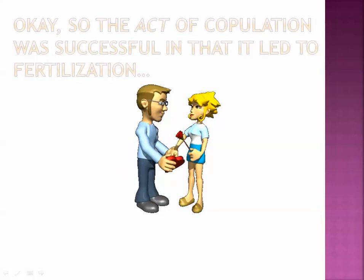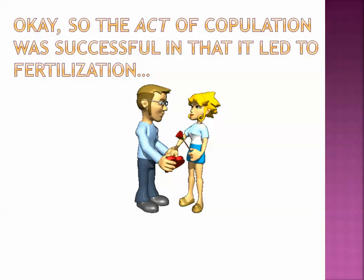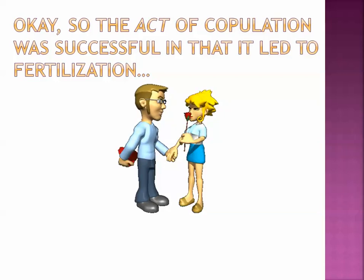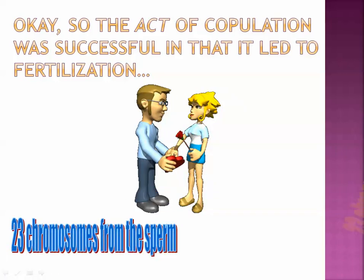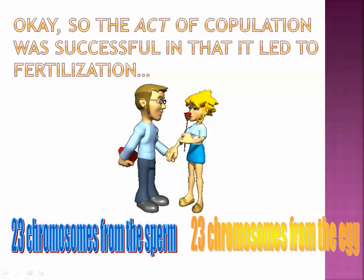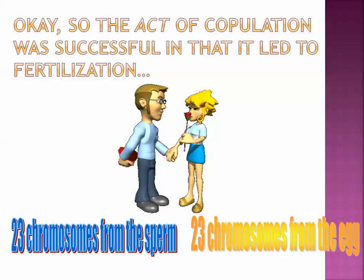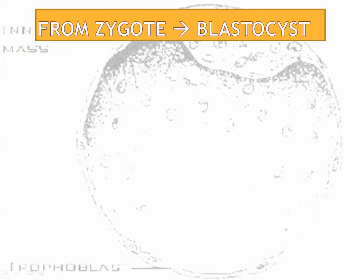The act of copulation has been successful in that it led to fertilization. The acrosome reaction, the cortical reaction — one successful sperm has contributed 23 chromosomes to match with the 23 chromosomes in the egg to produce a brand-new human. So in the beginning, that's just one cell. These two cells combined, they formed one cell, which is called the zygote.